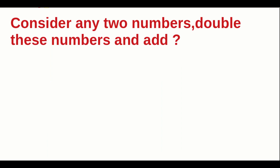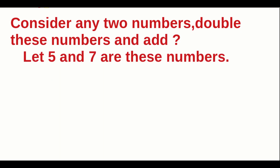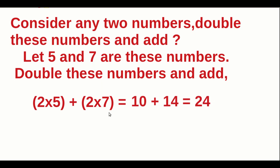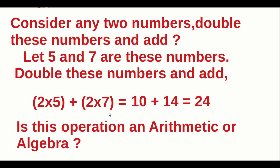Consider any two numbers — double these numbers and add. Let's take 5 and 7. Doubling 5 means we get 10, and doubling 7 we get 14. Then 10 plus 14, we got 24. Doubling actually means multiplying by 2: 5 into 2 is 10, 2 into 7 is 14, then the answer is 24. Is this operation Arithmetic or Algebra? Definitely, there are only numbers, so it is an Arithmetic Operation.